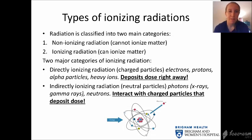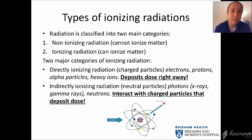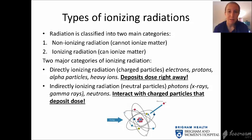Let's start with the types of ionizing radiation. Radiation is classified into two main categories: non-ionizing radiation, which cannot ionize matter — it cannot kick an electron out of the atomic shell to create an ion — and ionizing radiation, which can ionize matter. There are two major categories of ionizing radiation. Directly ionizing radiation is due to charged particles via the Coulomb force, and includes electrons, protons, alpha particles, and heavy ions, which deposit their dose right away.